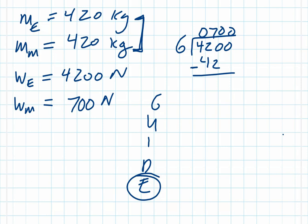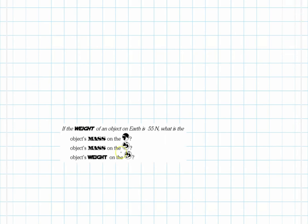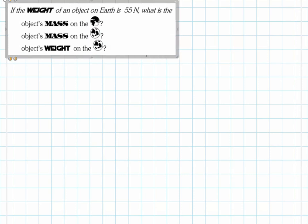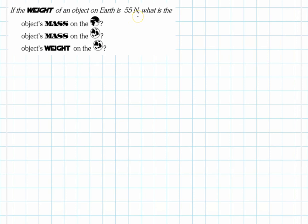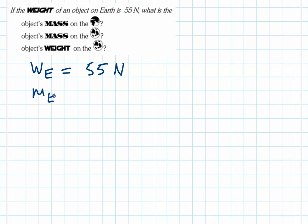Let's look at another example. This time, we have the weight of an object on Earth given as 55 Newtons. We need to find the object's mass on Earth, its mass on the Moon, and its weight on the Moon. Press pause and try this on a piece of scratch paper. The weight on Earth is given as 55 Newtons. The mass on Earth is going to be the same as the mass on the Moon, but we need to figure that out. We also need to find the weight on the Moon.